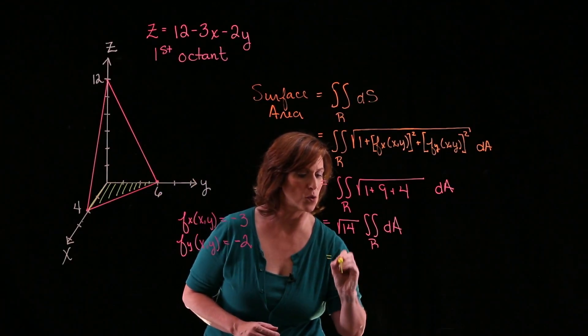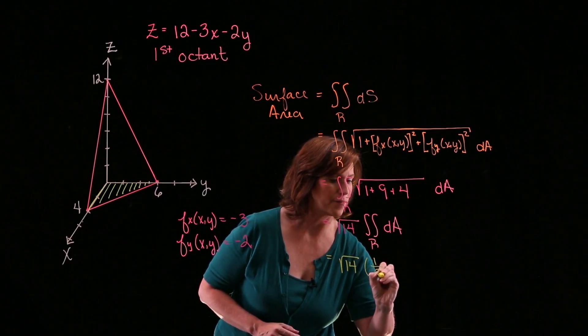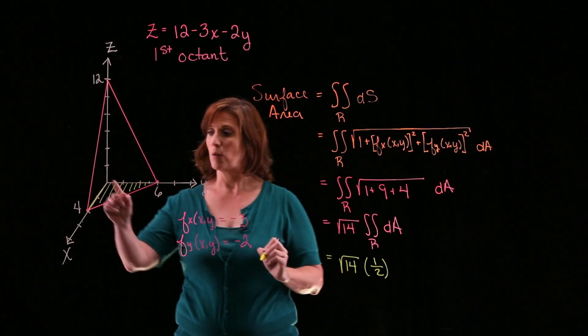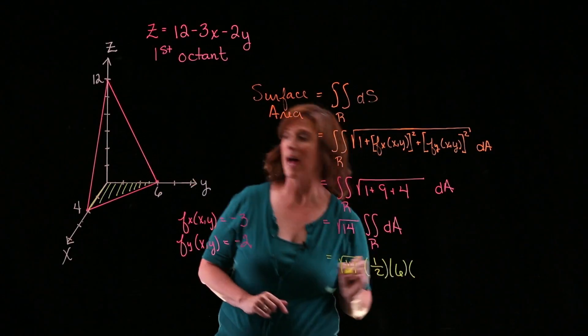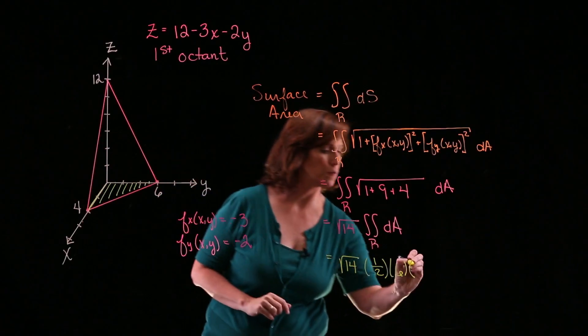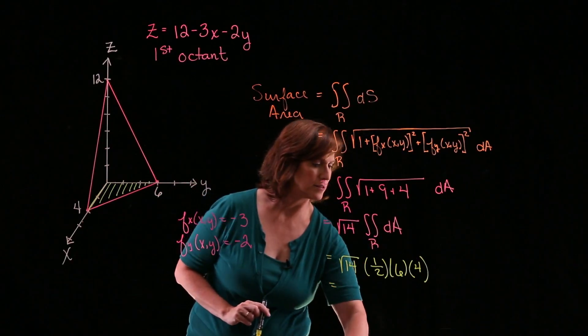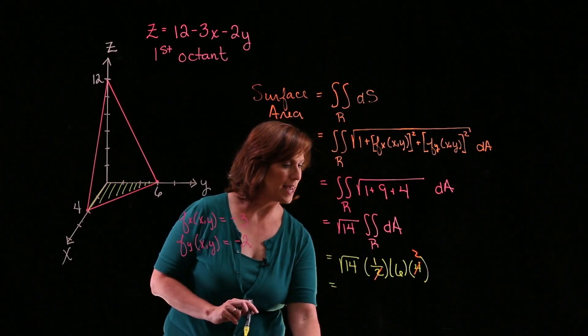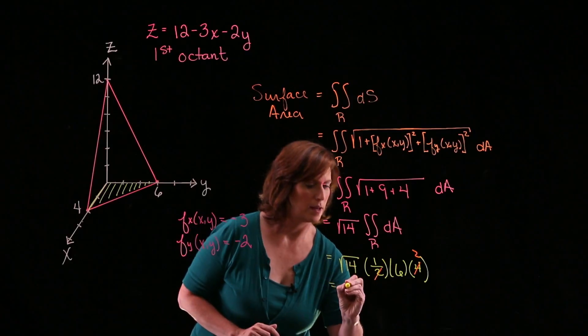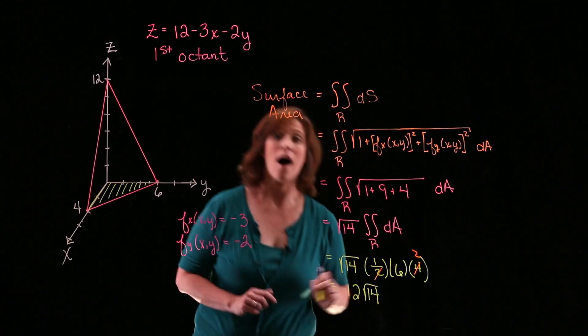So I can say that this is the square root of 14 times one half the base, which is going to be 6, times the height of that triangle, which is 4. And so I can cancel. And I can say that this is going to be 12 times the square root of 14.